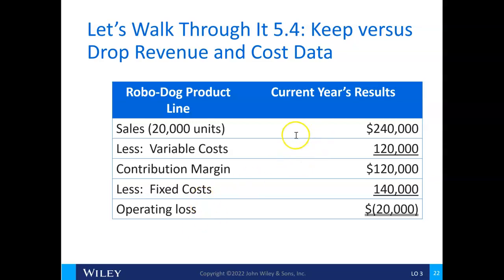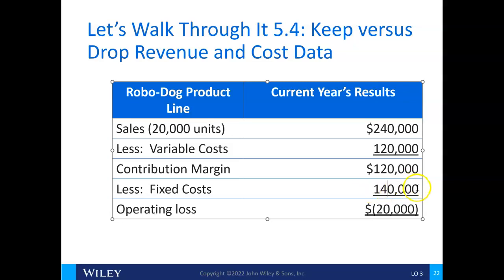Sales are $240,000 with variable costs producing a contribution margin of $120,000. Fixed costs are $140,000, resulting in an operating loss of $20,000. The tricky part: there's $120,000 of contribution margin cash, but fixed costs are $140,000. We know $110,000 is avoidable, but $30,000 will remain. The question is whether that $30,000 represents allocated costs or costs directly tied to this product line.